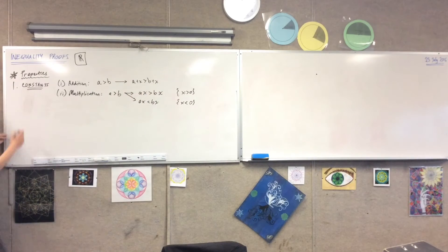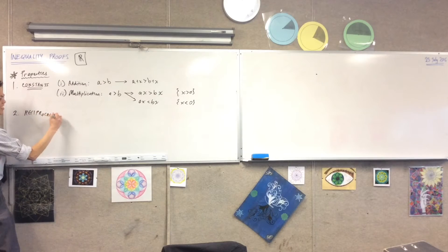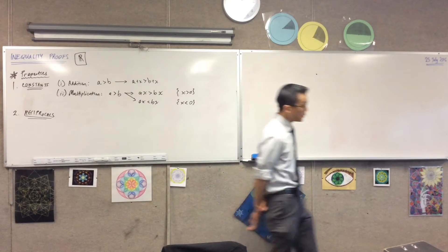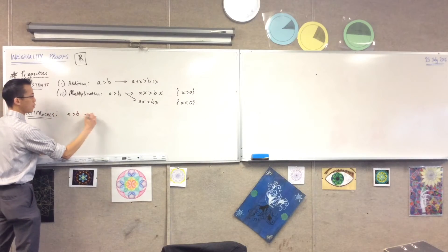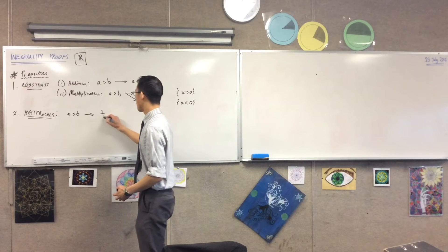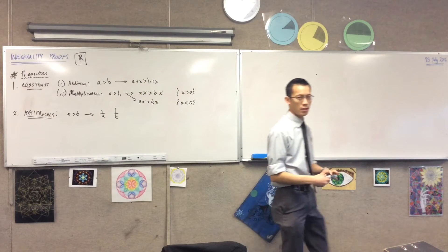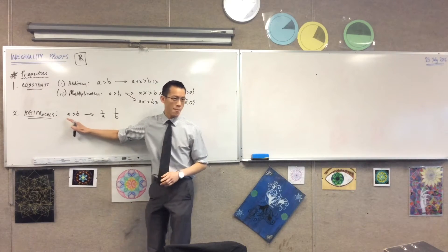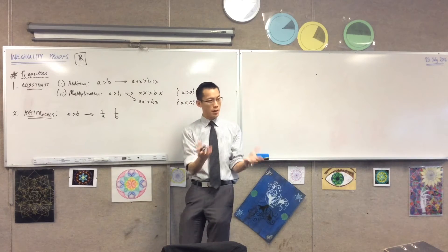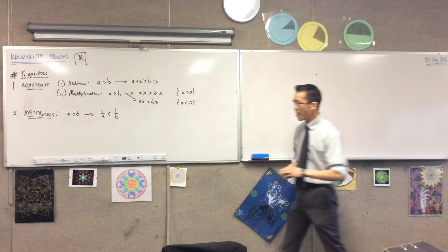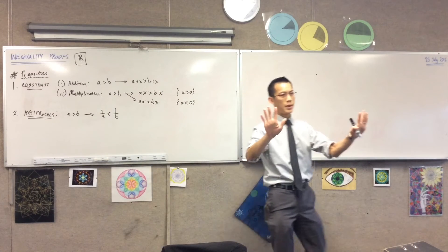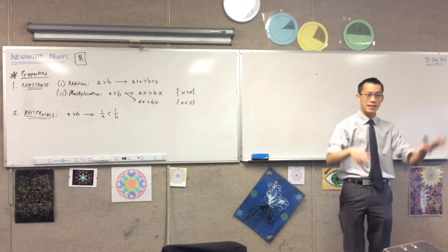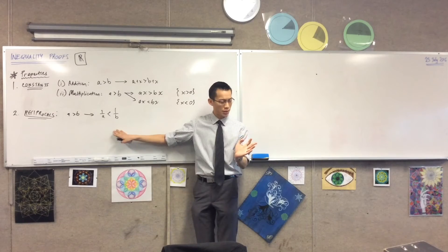The second category is reciprocals. If A is greater than B, what does that imply if I take reciprocals of both sides? If A is a big number and B is a small number, then a big denominator makes the overall number smaller, so the inequality faces the other direction. This is similar to what happens with multiplication — in equation world you can take reciprocals and they stay the same, but with inequalities something is different.